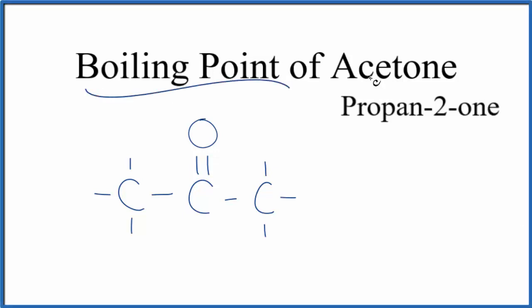Let's take a look at the boiling point for acetone. This is also known as propan-2-one. We have one, two, three carbons. That's the propan part.